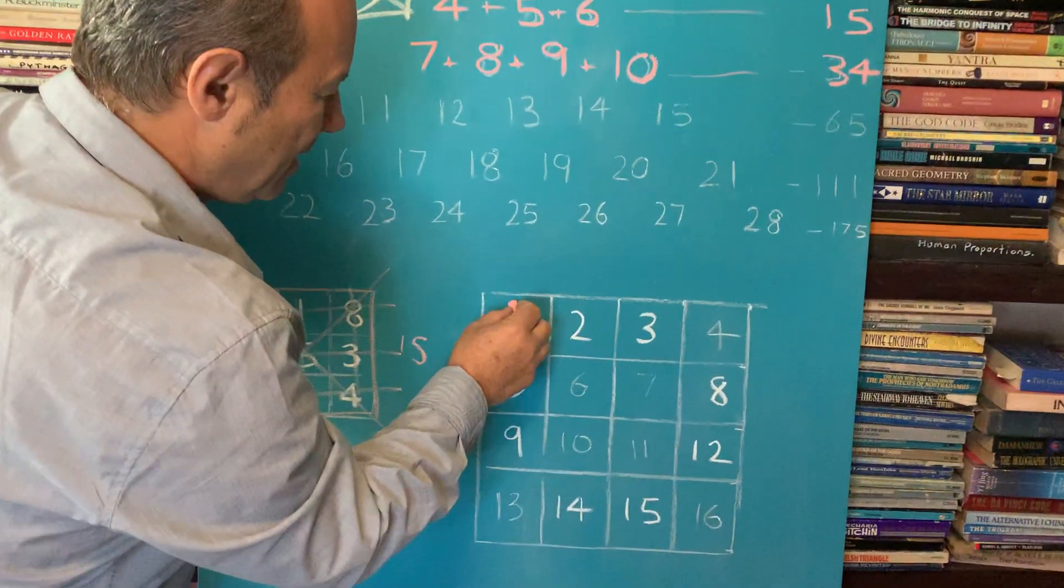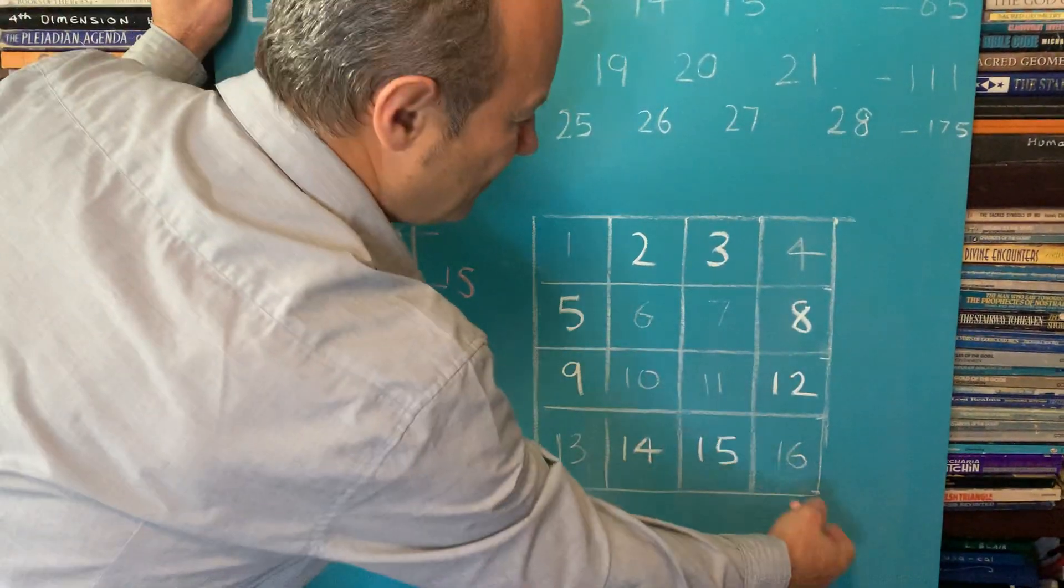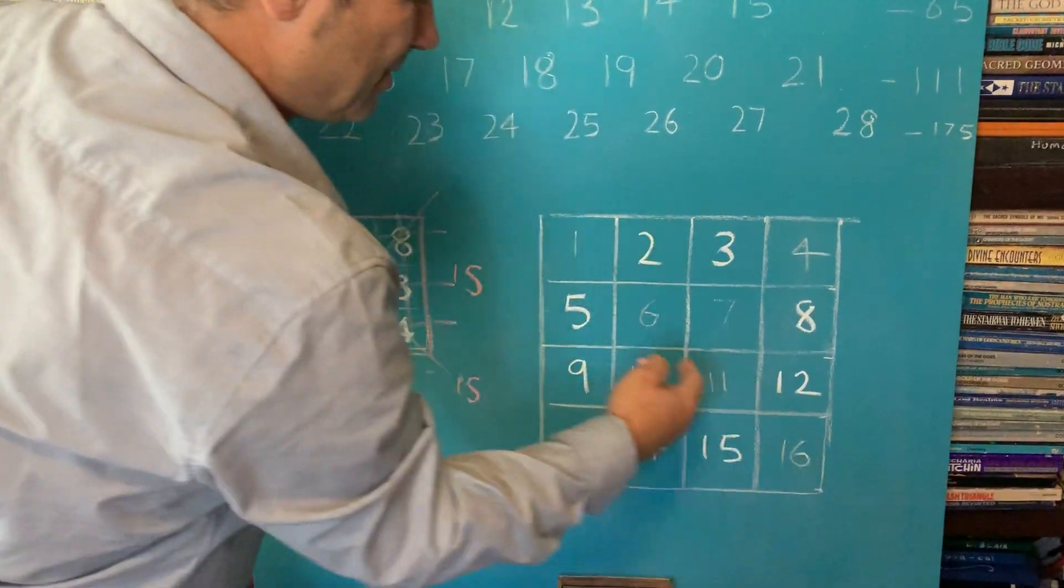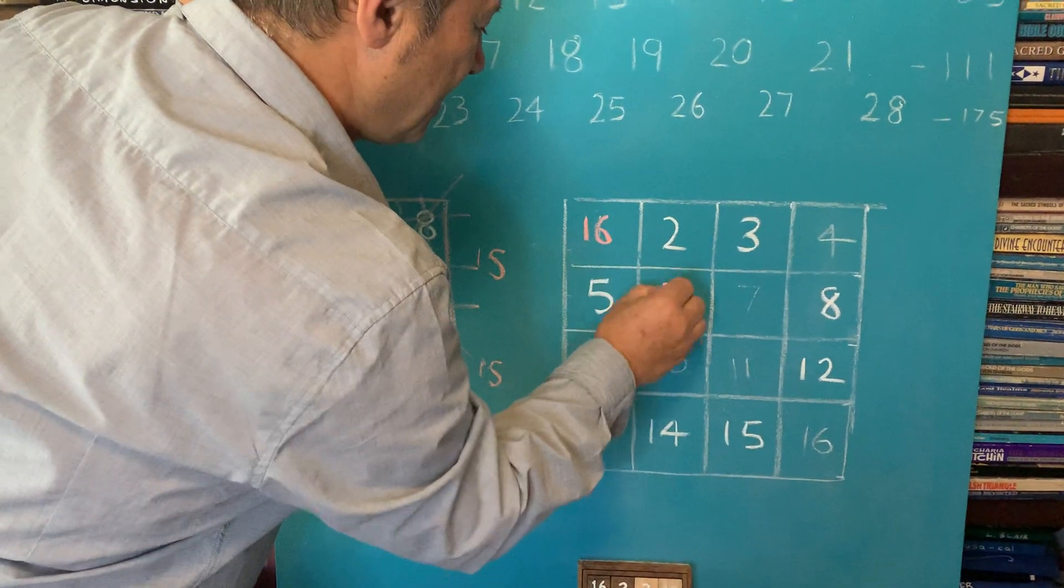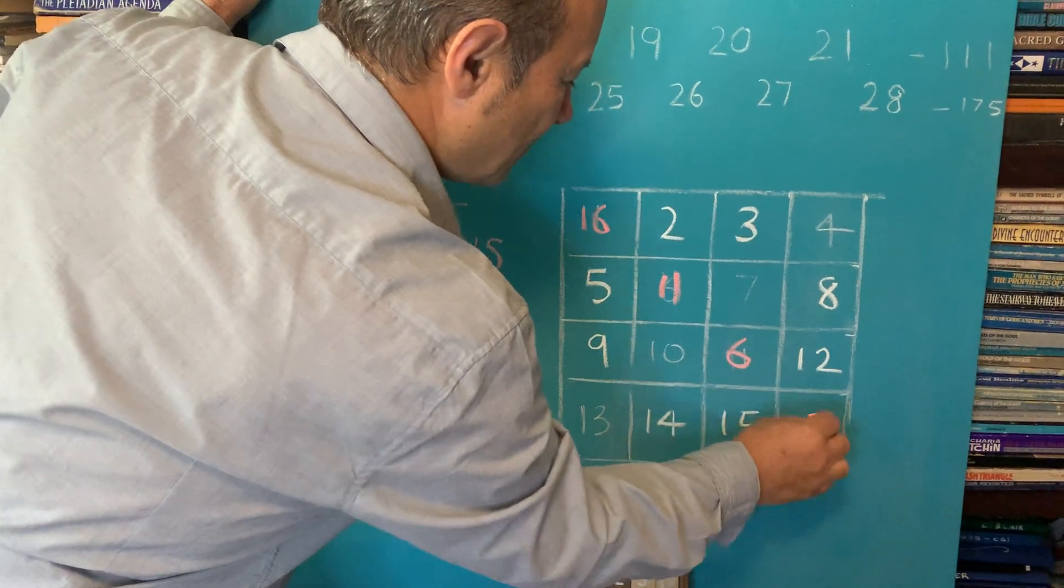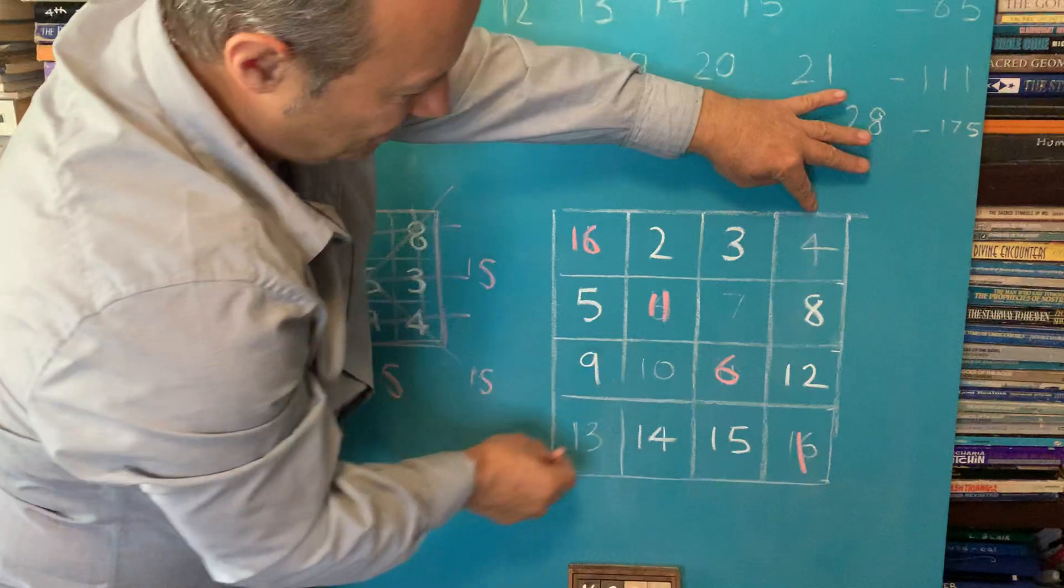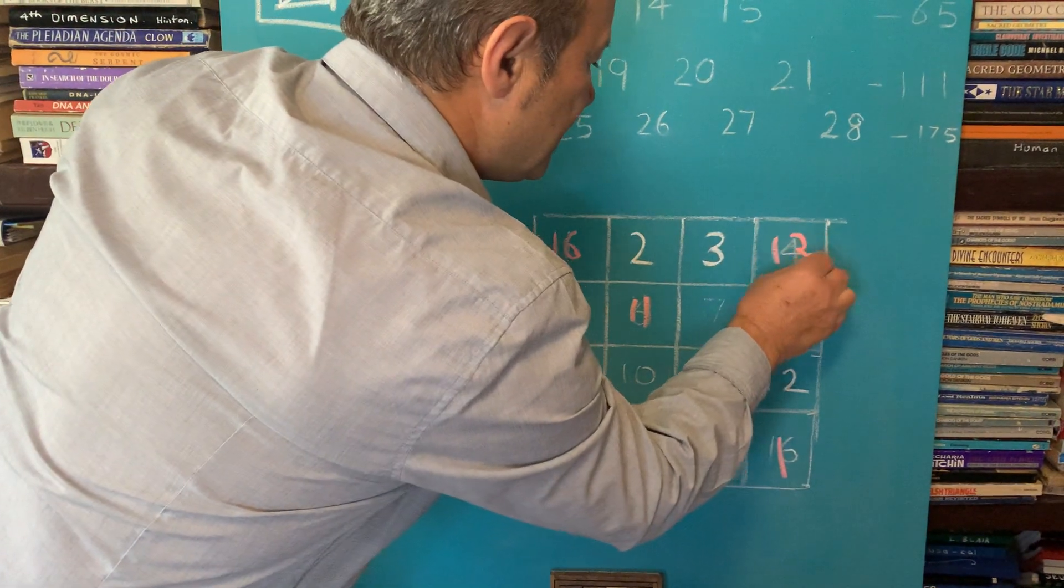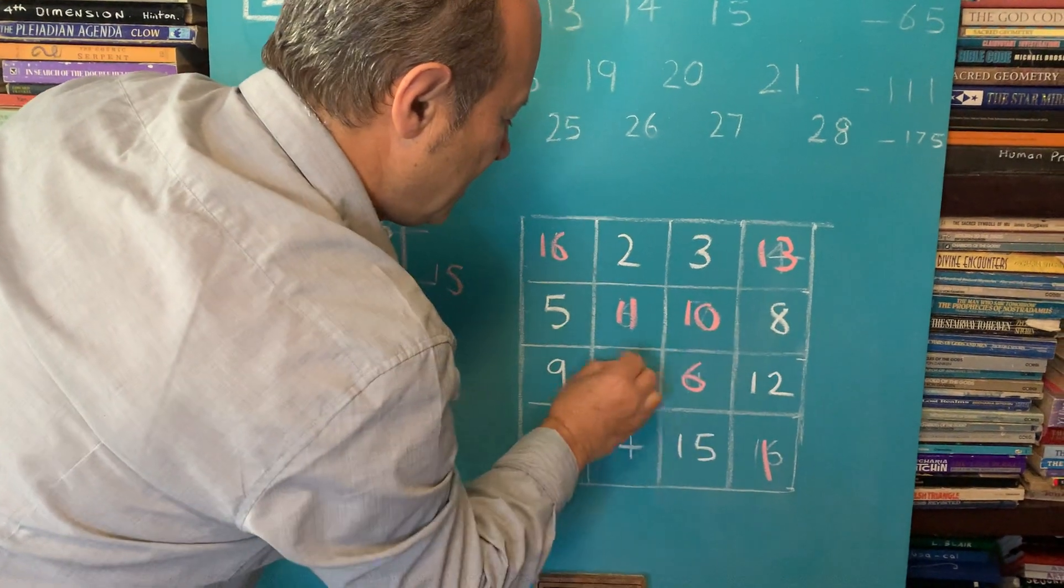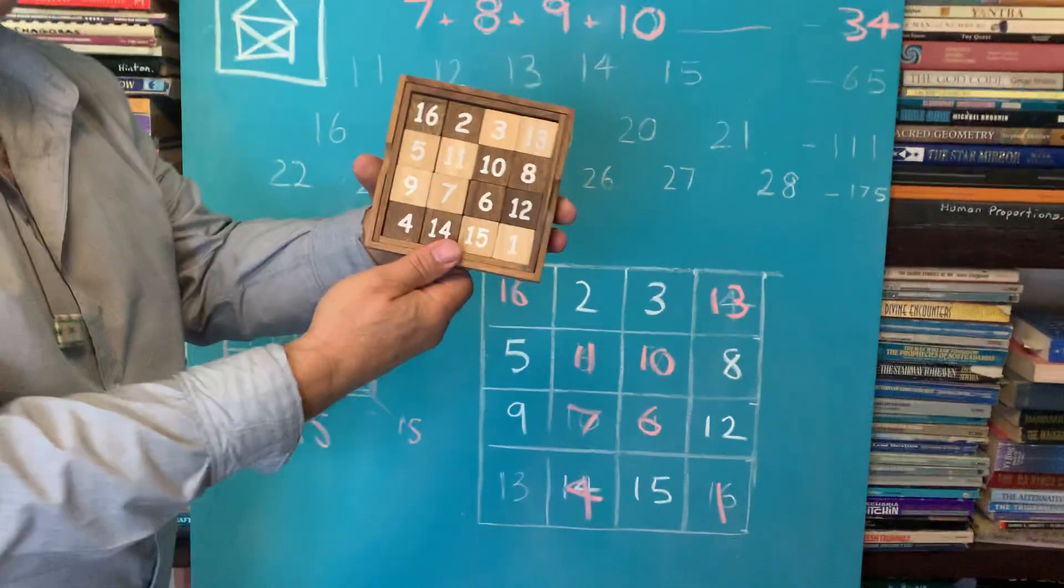So instead of writing, see how I've written the numbers one, two, three, four, up to 16, I'm going to reverse the diagonals. I'm going to put 16, 11, 6, 1 here. So if I put 16, 11, 6, and 1, I've reversed that diagonal. I'm going to reverse this diagonal of the natural square. So I'm going to go 13, 10, 7, 4. And now I've got a magic square that's complete.